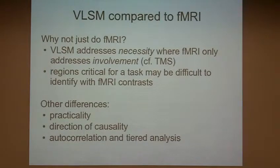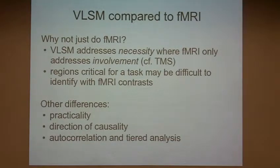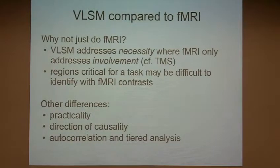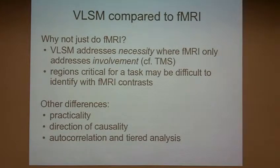The reason most often cited is that VLSM or any lesion-behavior mapping addresses the issue of necessity — in the sense that when a function disappears after a brain region is lesioned, you can draw a stronger inference that that area is necessary for that function, especially if it's a consistent relationship across a large group of patients. TMS would be even more compelling because you can experimentally and within-subjects remove and restore that region in principle. Whereas fMRI really only addresses involvement — an area can light up during an fMRI study and be completely epiphenomenal to the cognitive function of interest.